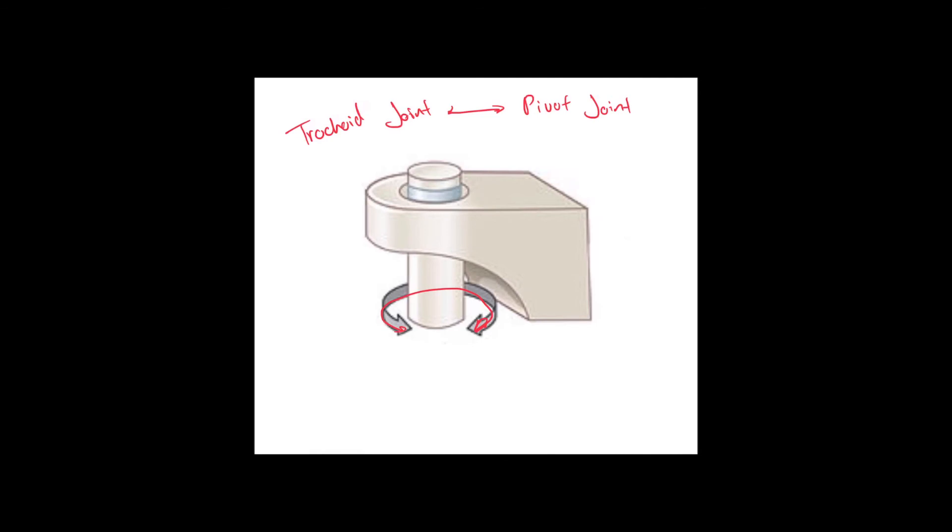The reason why it's called a pivot joint is because it's only allowed to rotate within this range of motion. It kind of rotates in a ring.